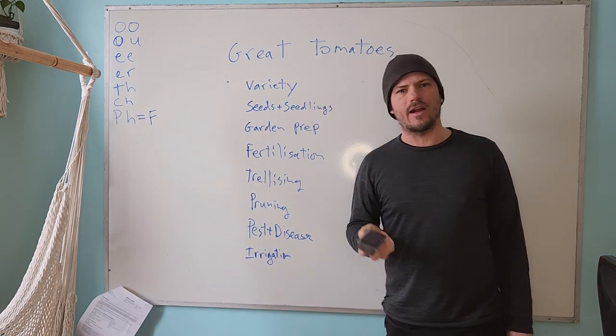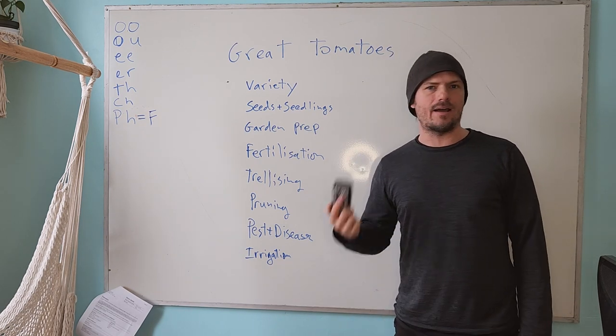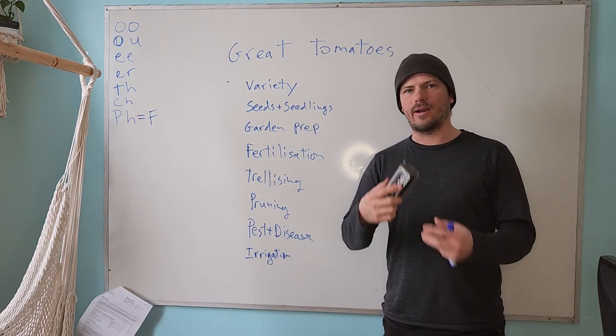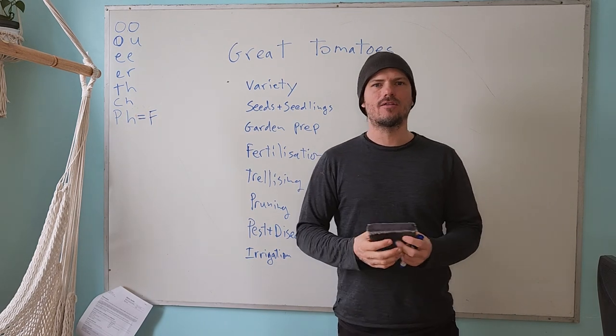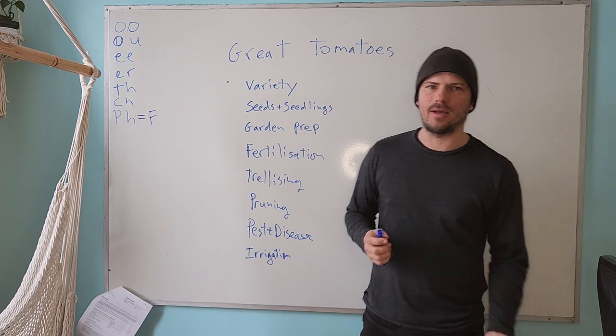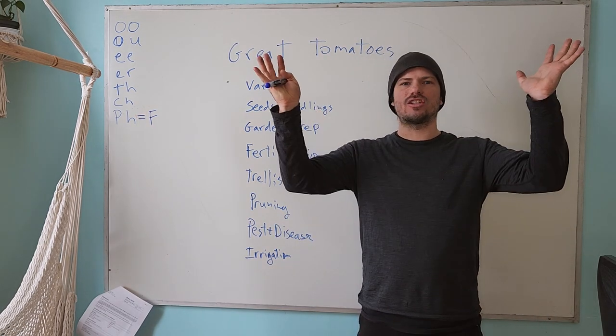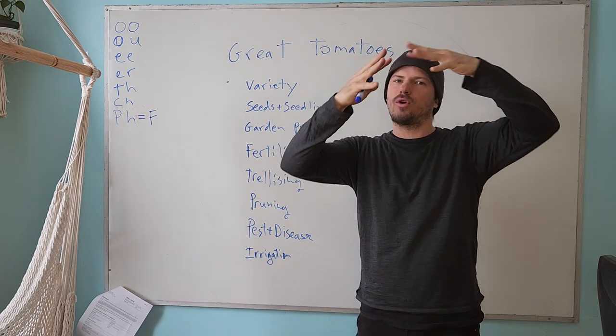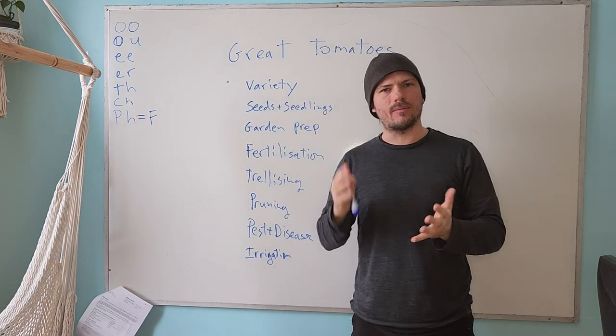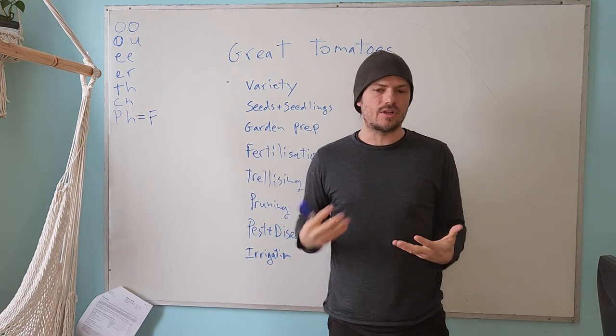Then other things in terms of varieties, if you want to save your own seed, you might want to consider growing an open pollinated or heirloom variety where the seeds are going to be true to type, compared to a hybrid. So a hybrid is a type of tomato where they take these two genetic lineages and then they cross them and that cross creates hybrid vigor. So they're much more uniform, much more predictable, much more productive.